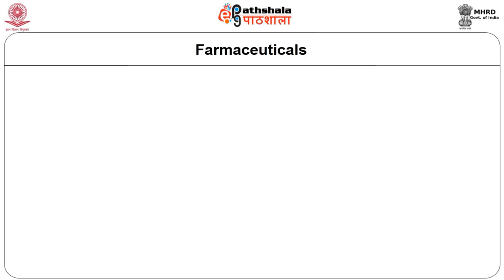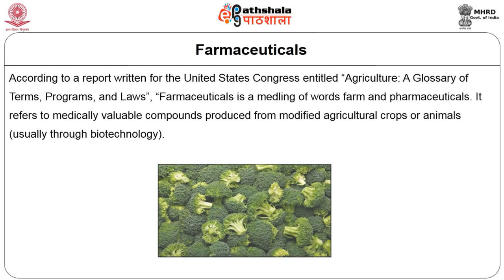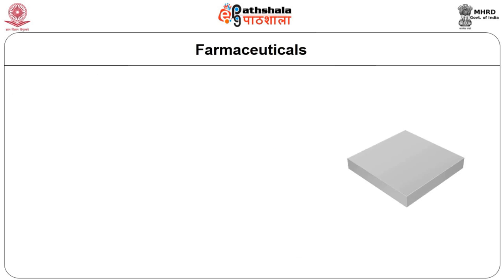Now we will see a new term: pharmafoods. According to a report written for the United States Congress entitled 'Agriculture: a Glossary of Terms, Programs and Laws,' pharmafoods is a blending of 'farm' and 'pharmaceuticals.' It refers to medically valuable compounds produced from modified agricultural crops or animals, usually through biotechnology. An example is broccoli, which is being produced as a pharmafood that may help in the prevention of cancer.